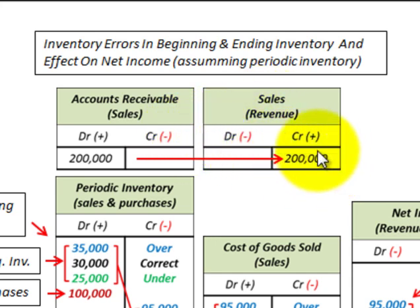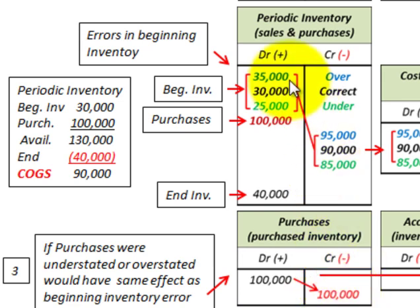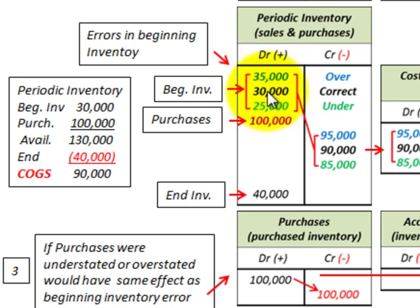For example, we have sales as a credit revenue of $200,000 for the period. With the periodic method, we have a purchases account debited at $100,000 for purchases for the period, then credited out at the end of the period and moved into the inventory account. So our purchases are at $100,000.